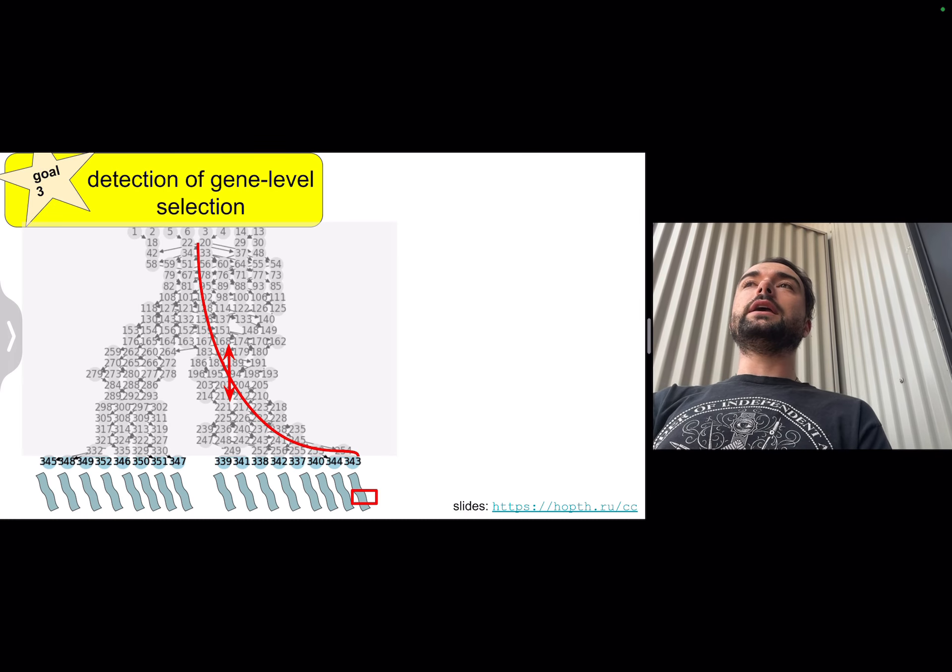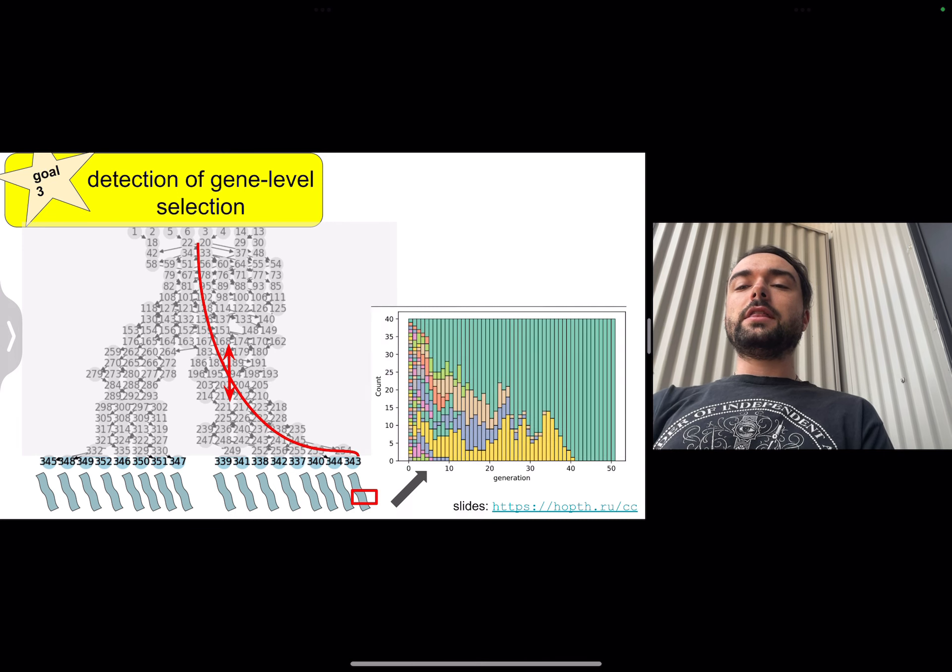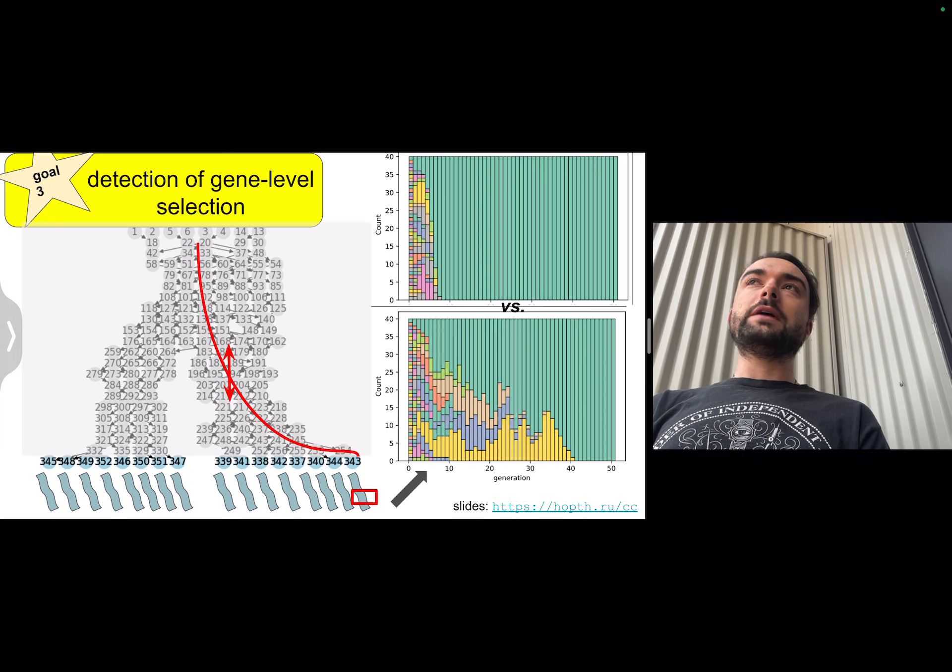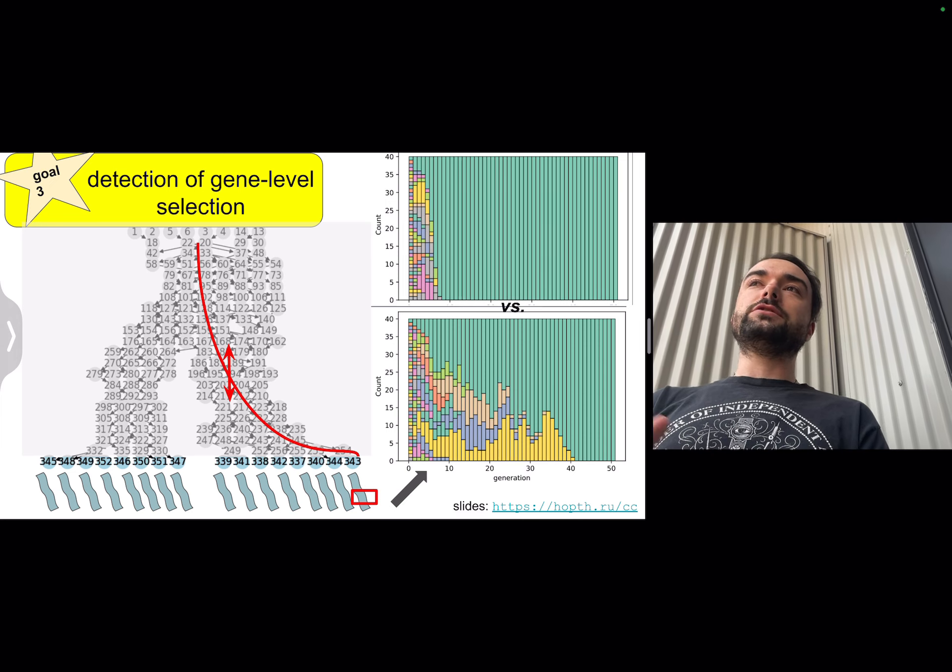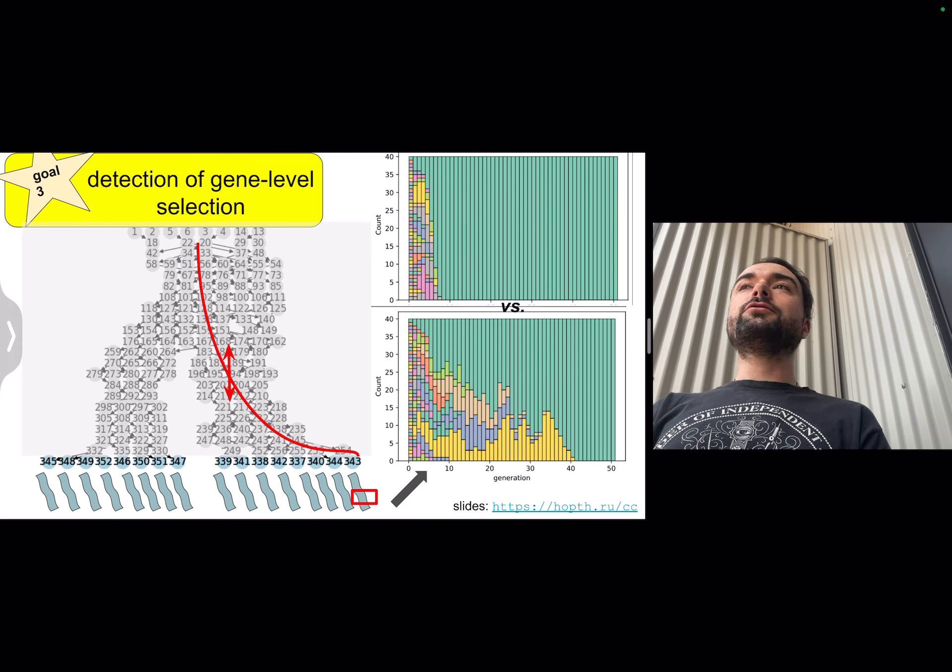The final thing we'd like to be able to do is to detect gene level selection events. This is a little bit tricky because it's not enough to just detect that a gene increases in frequency. We need to be able to say something about how fast that occurs because under random drift, we do expect genes to stochastically increase in frequency and eventually fix in the population.